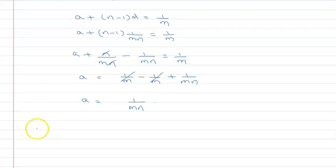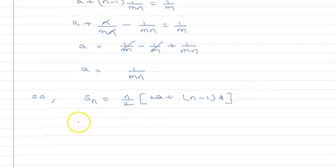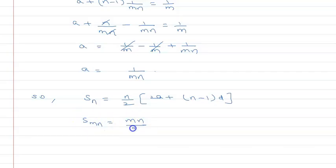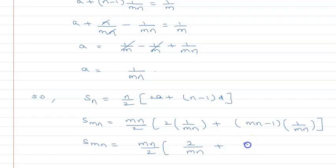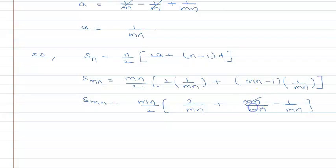Now I need the sum of mn terms. The sum of n terms formula is: S_n = n/2 × [2a + (n-1)d]. For the sum of mn terms: S_mn = mn/2 × [2a + (mn-1)d]. Substituting a = 1/mn and d = 1/mn: S_mn = mn/2 × [2/mn + (mn-1)/mn]. Simplifying inside the bracket: 2/mn minus 1/mn = 1/mn, giving 1/mn + 1.